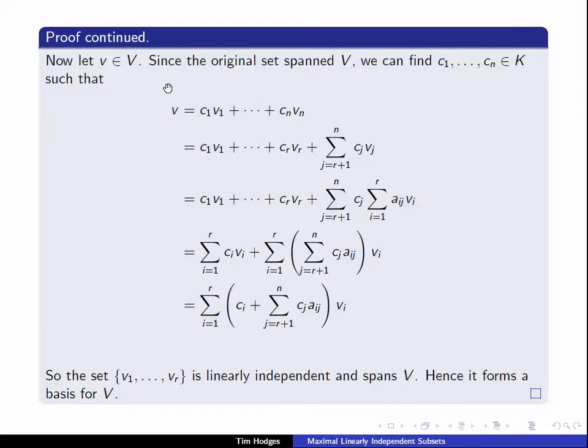Now, let's go back and pick any element of V. We want to show that it can be represented as a linear combination of V1 up to Vr. Since the original set spanned V, we can certainly find coefficients C1 up to Cn in the field, such that V is C1V1 plus CnVn. But it's a linear combination of V1 up to Vn. Let's split this combination into the sum up to point R and then the sum of the rest of the terms. And let's write the sum of the rest of the terms like this.